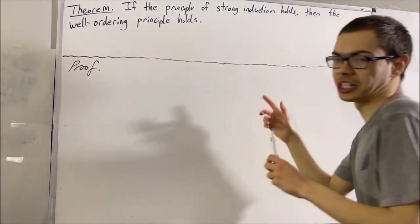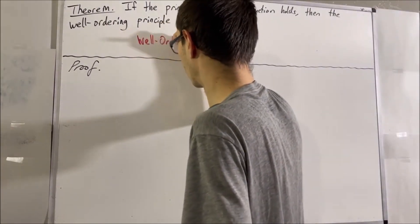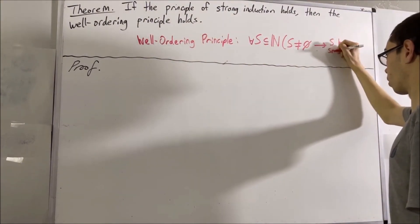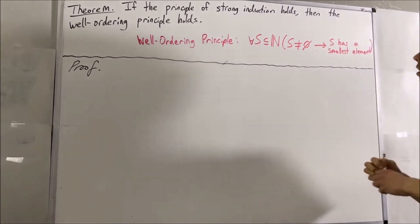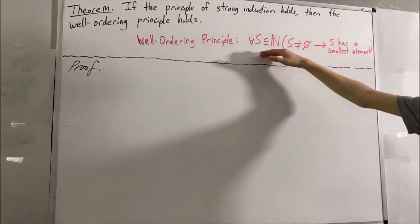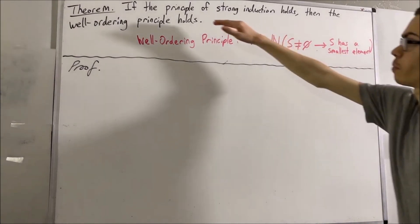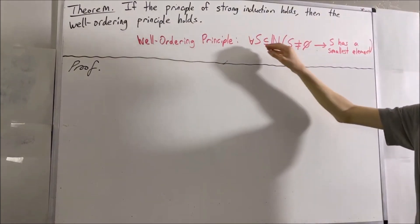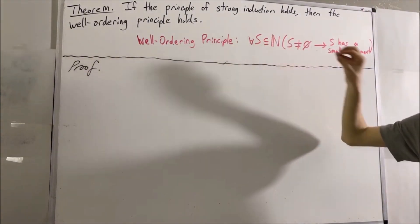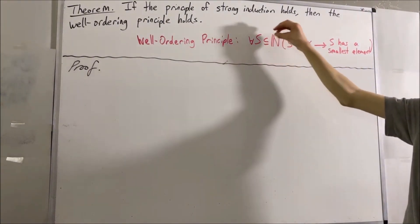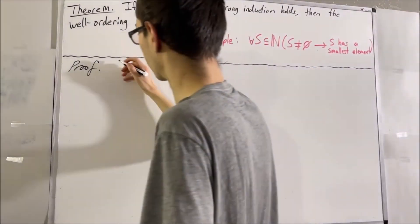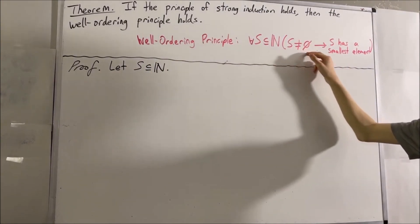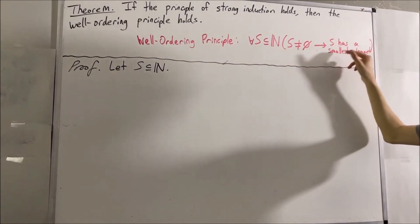Let me write that in logic notation. This is the well-ordering principle, and we're going to prove it under the assumption that the principle of strong induction holds. So to start out, we're trying to prove a statement about all subsets of the natural numbers, so give me an arbitrary subset of the natural numbers — I'll call it S. Our whole goal now is to prove that if S is non-empty, then S has a smallest element.